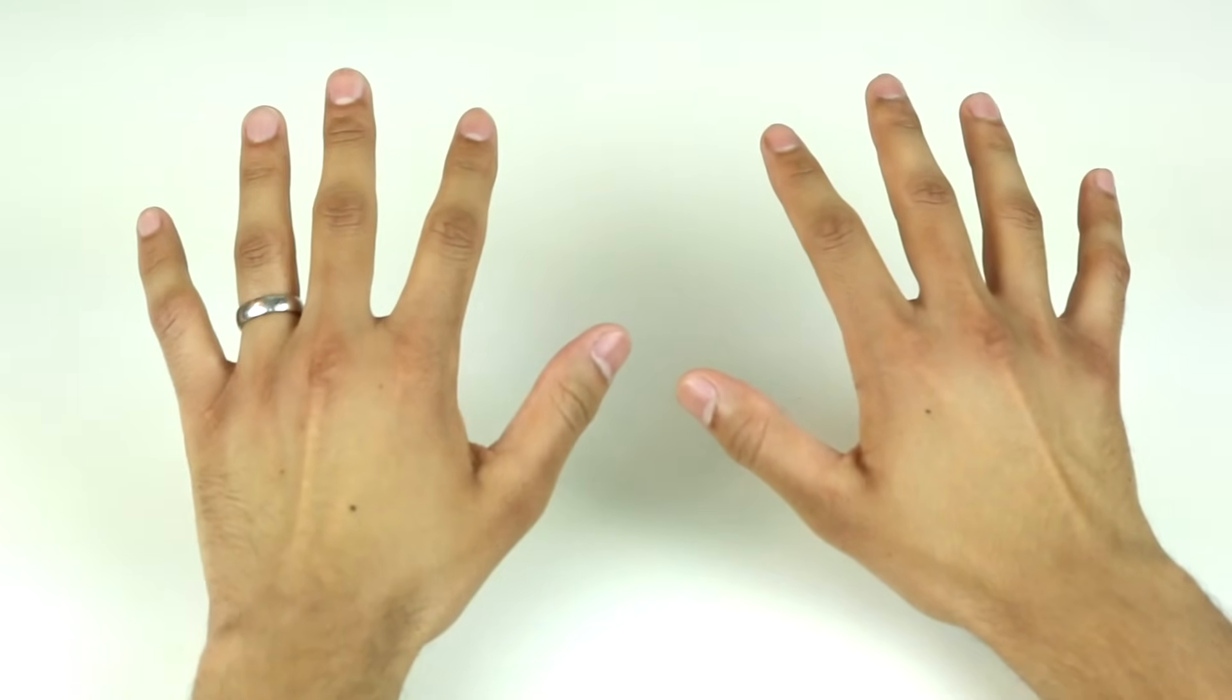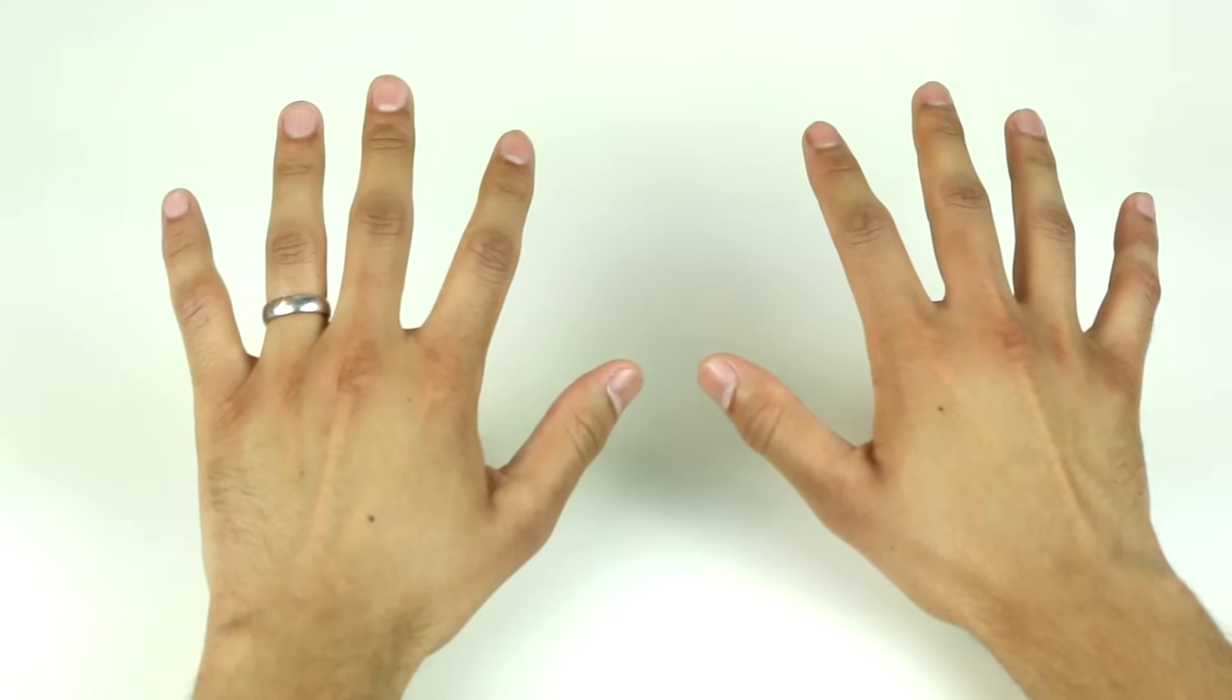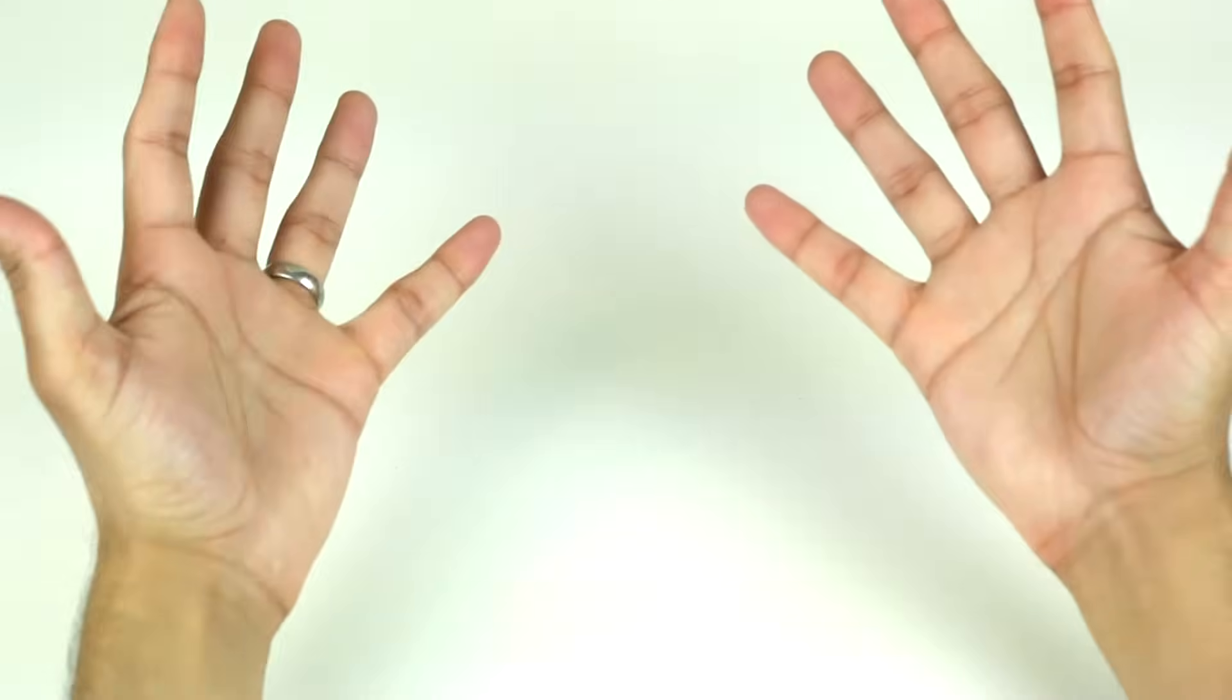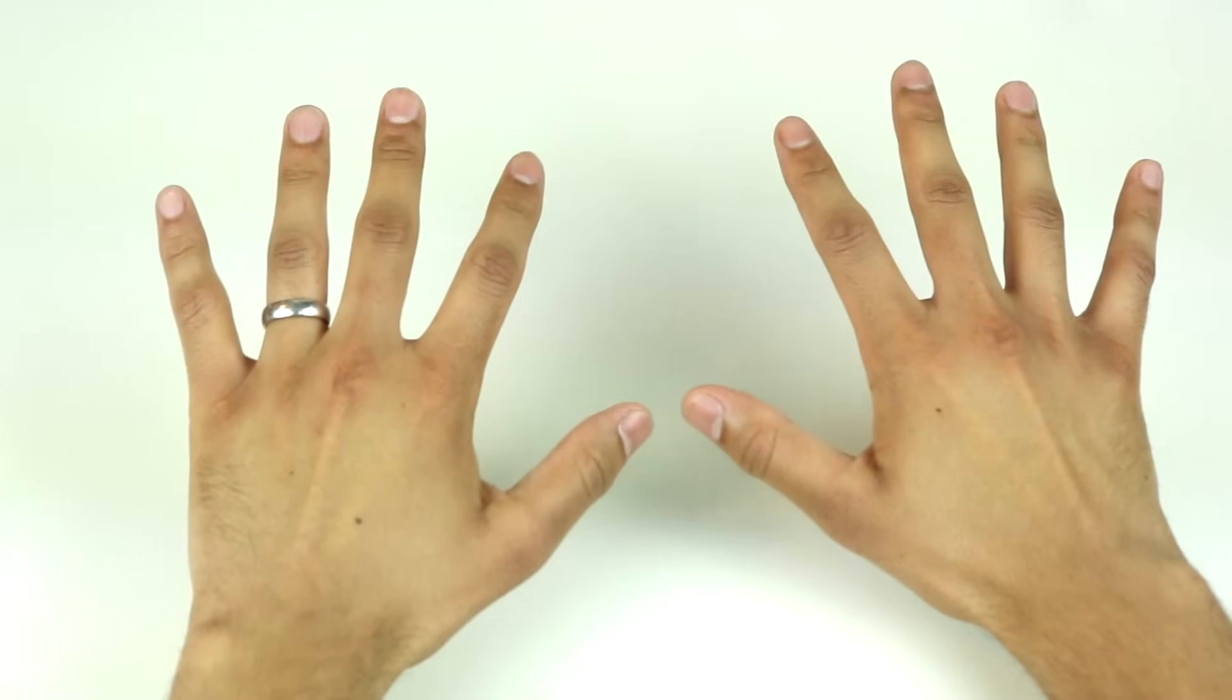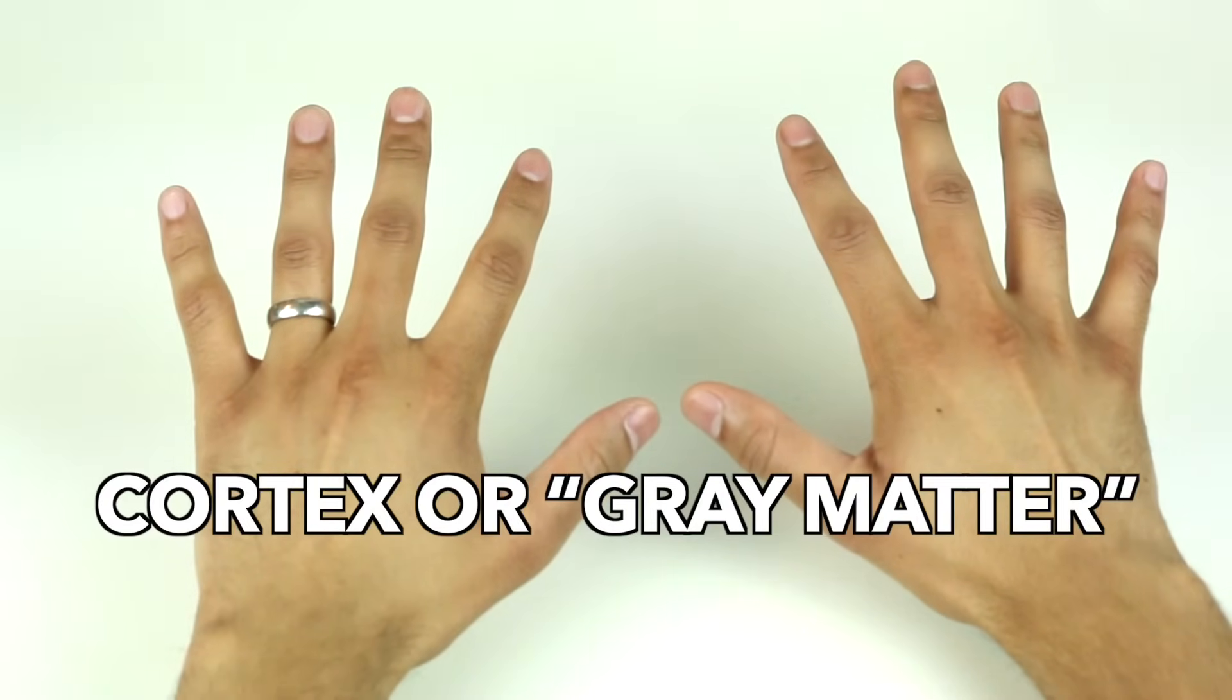Stretch out your hands in front of you. See how the skin on this side of your hands is darker than on the other side? That's just like the outer layer of the brain, called the cortex, or the gray matter.